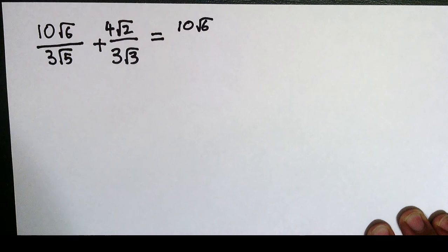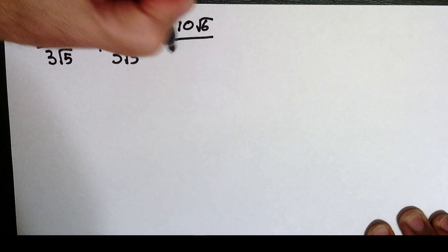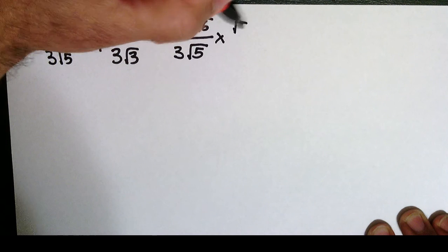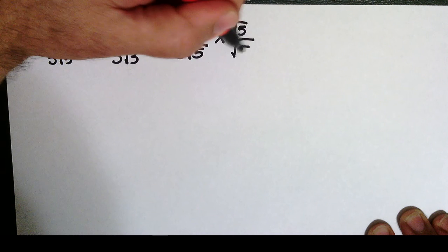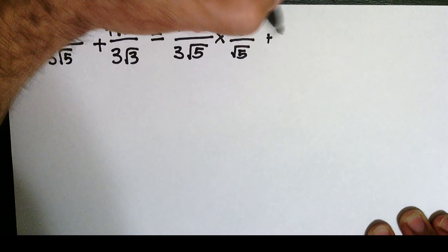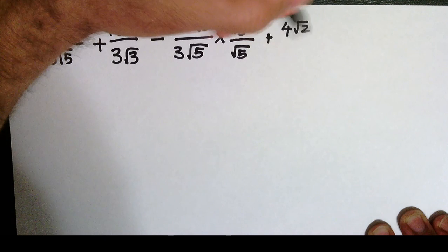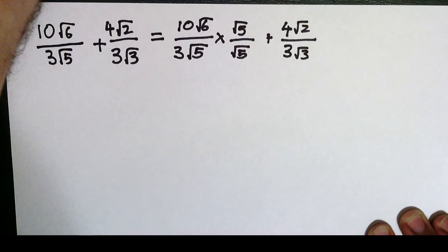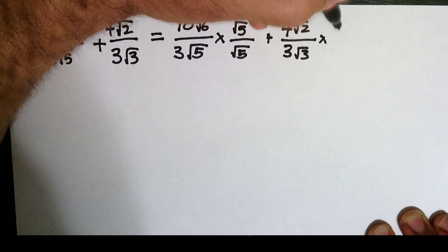So for the first fraction I've got 10 root 6 over 3 root 5, and I multiply by root 5 over root 5. For the second fraction I've got 4 root 2 over 3 root 3, and I multiply above and below by root 3 over root 3.